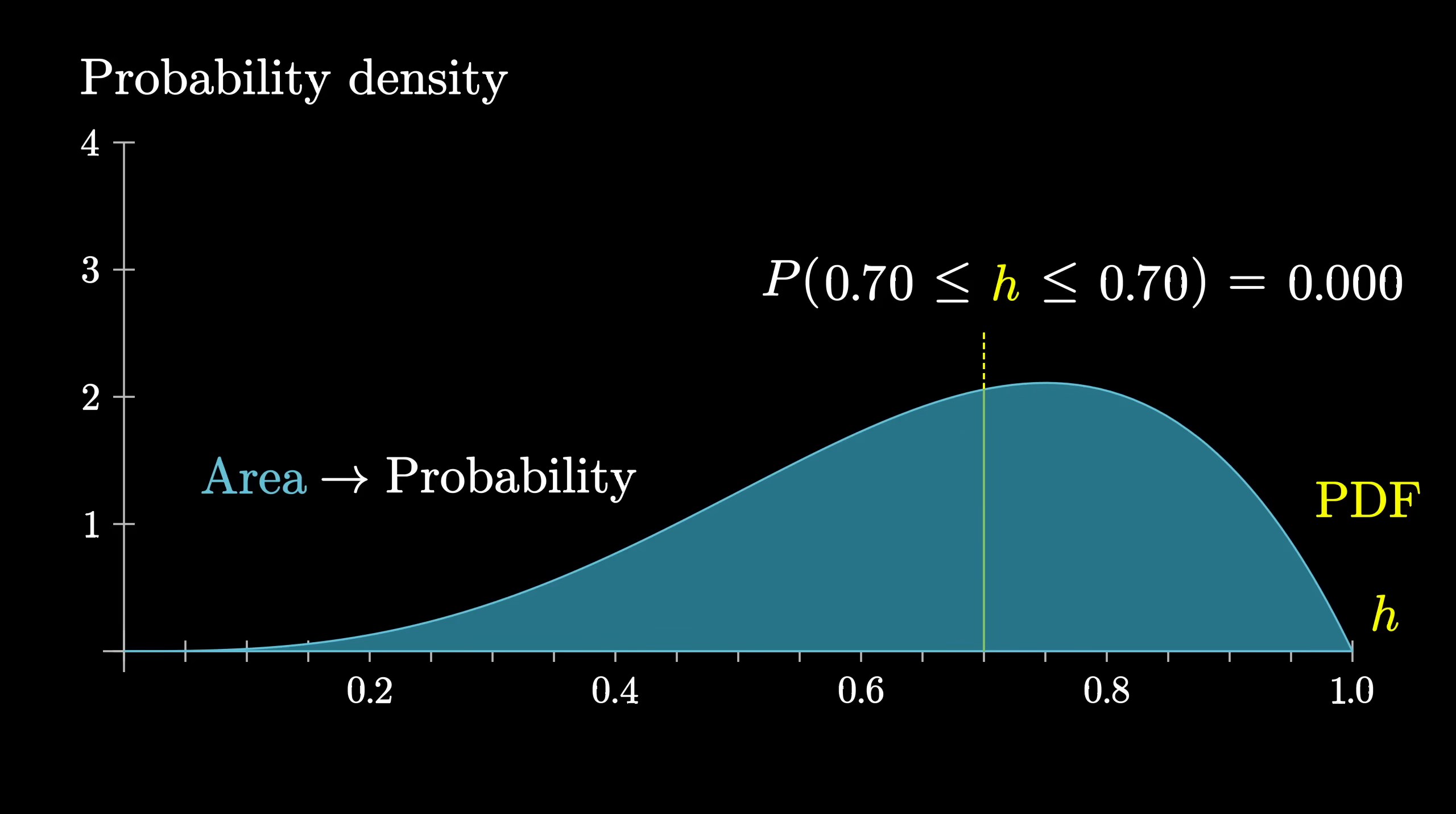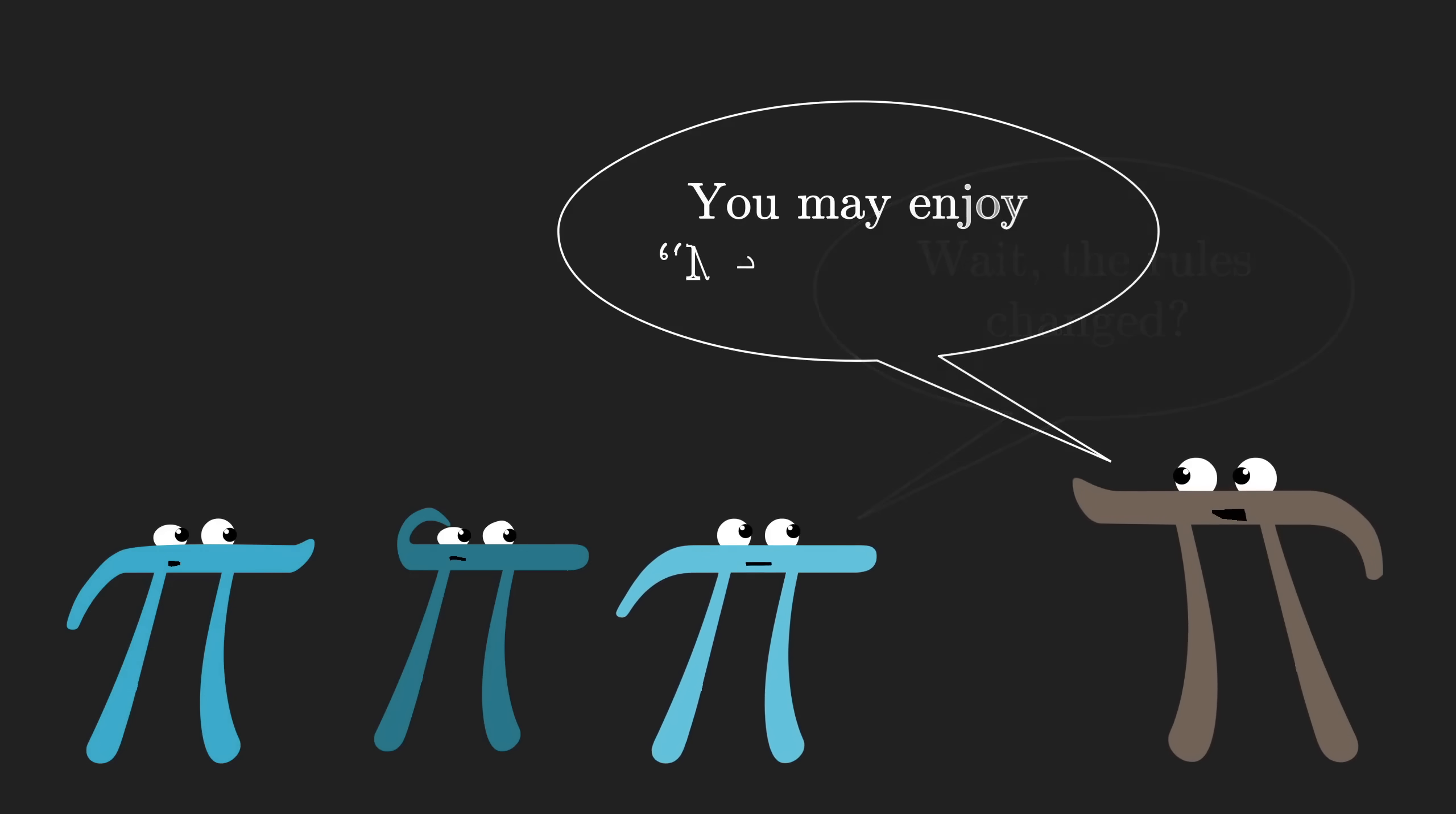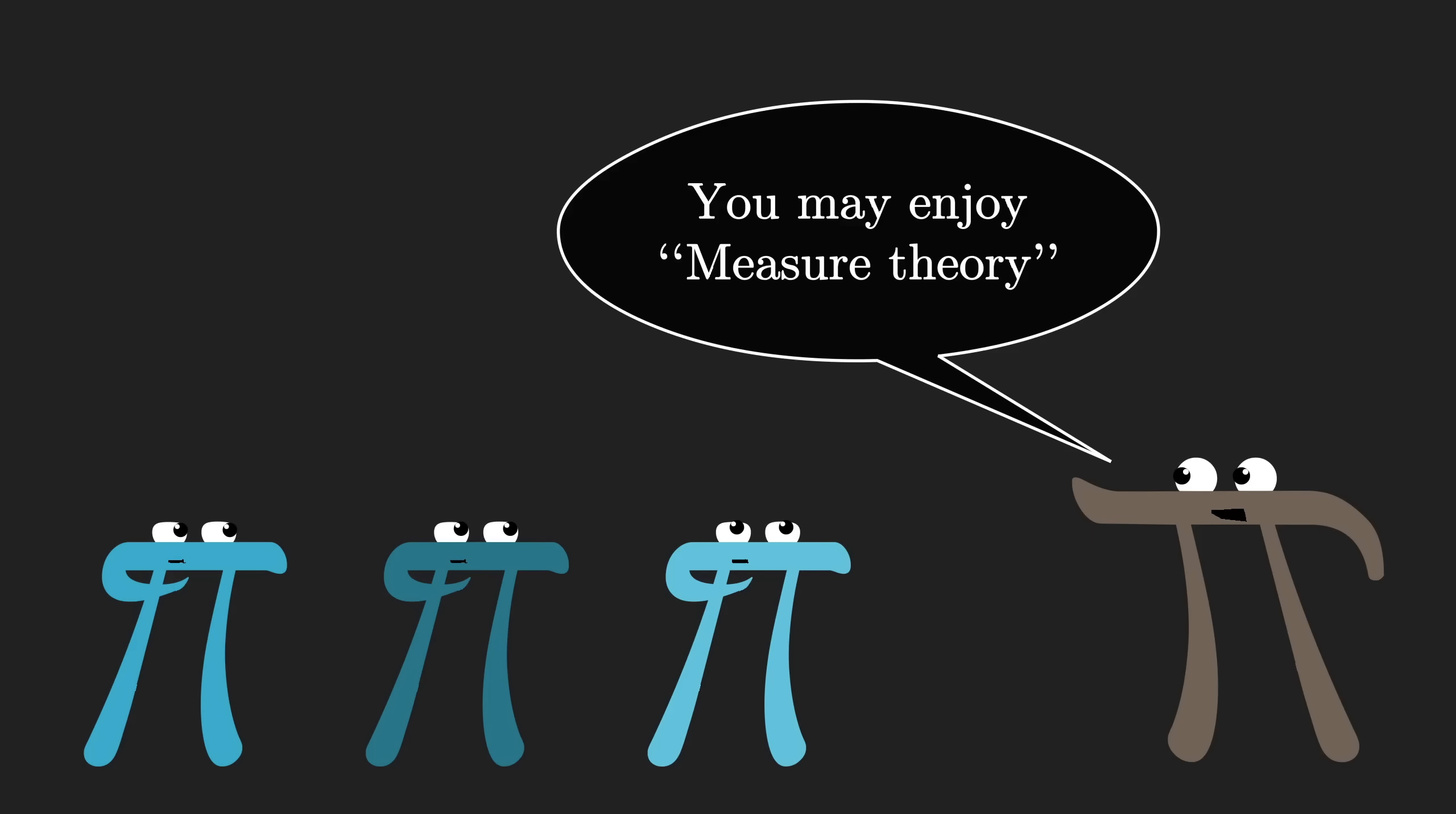If the idea of the rules changing between a finite setting and a continuous one feels unsettling, well you'll be happy to know that mathematicians are way ahead of you. There's a field of math called measure theory, which helps to unite these two settings and make rigorous the idea of associating numbers like probabilities to various subsets of all possibilities in a way that combines and distributes nicely.